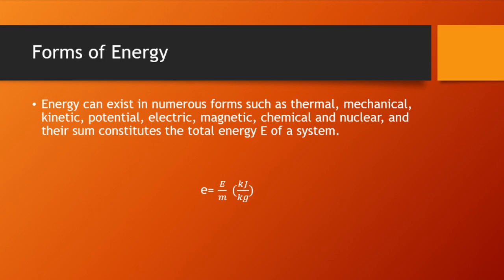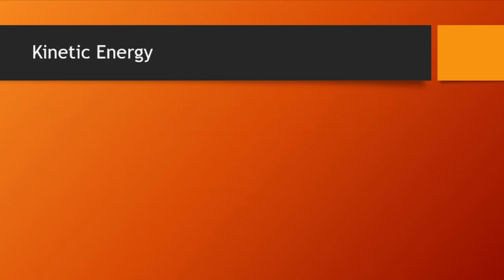Energy may exist in potential form — by virtue of height or elevation — in kinetic form by virtue of velocity, thermal form by temperature difference, electrical, chemical, nuclear, or other various forms. Heat and work are energy in the process of transfer from one body to another. In thermodynamic analysis, we classify the various forms of energy that make up the total energy of a system into two groups: macroscopic and microscopic.